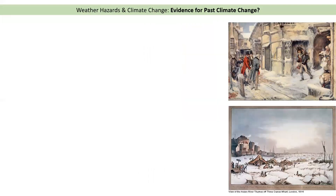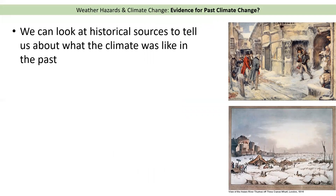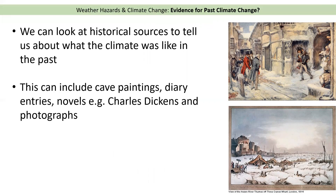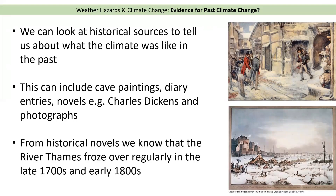The third piece of evidence is historical sources. We can look back at things produced by humans to work out what the climate was like. This can include cave paintings, diary entries, books and novels such as Charles Dickens, and more recently photographs. From historical novels we know the River Thames used to freeze quite regularly in the late 1700s and early 1800s, so we can work out it was probably a colder period in time.